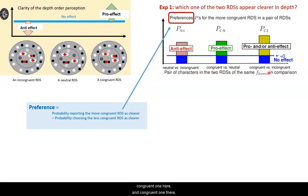And if they indeed prefer the neutral one here, congruent one here, and congruent one there, then all these preferences should be above zero.